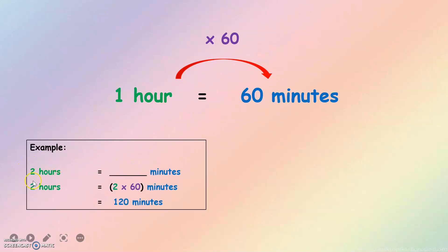For example, using whole numbers: 2 hours equals to how many minutes? Since 1 hour equals 60 minutes, to convert hours to minutes we multiply by 60. So 2 times 60 gives us the answer: 120 minutes.